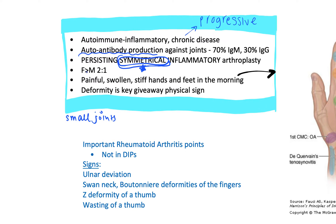It affects females to males at a ratio of about two to one. This makes sense because autoimmune conditions are typically more common in women than men, and here the ratio is two to one.